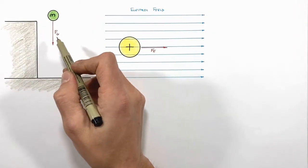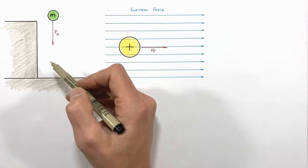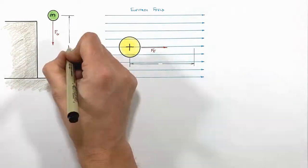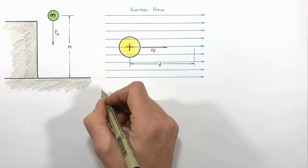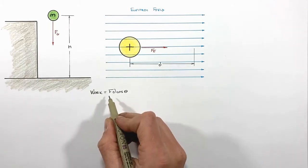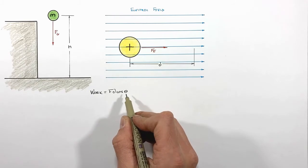Now, you'll remember that any time a force acts on an object over some displacement, work is done. And mathematically, work is defined as Fd cosine theta, where F is the force, D is displacement, and theta is the angle between the two.